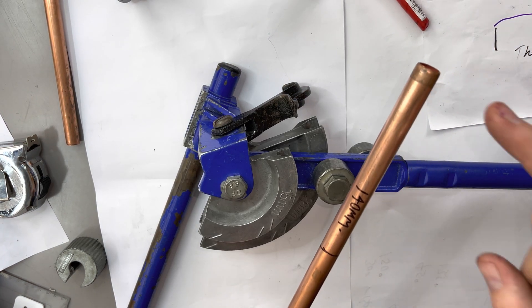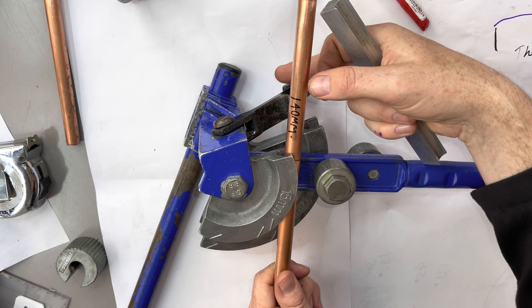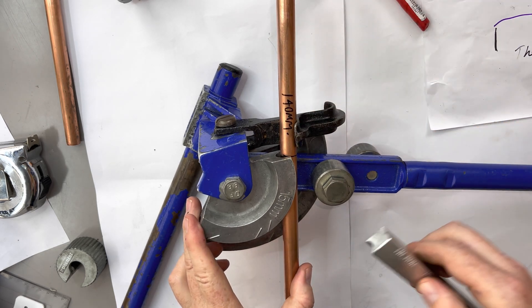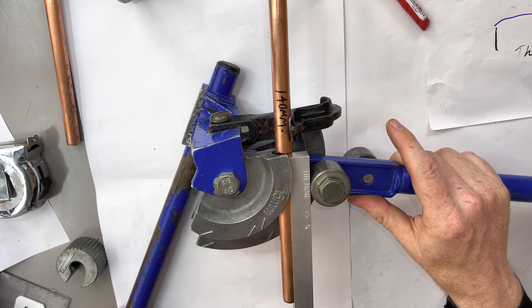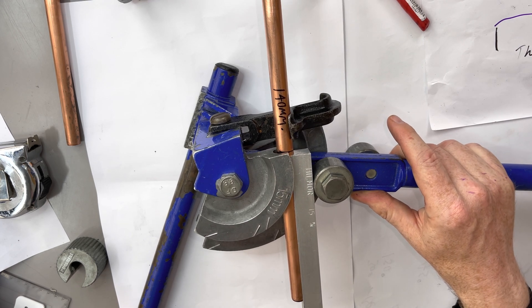Insert the pipe into the pipe bender. Make sure the 140 millimeter side is on the side where the stop goes. The reason being, when the pipe is bent, this side of the pipe will not move.